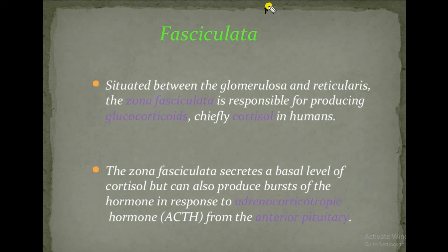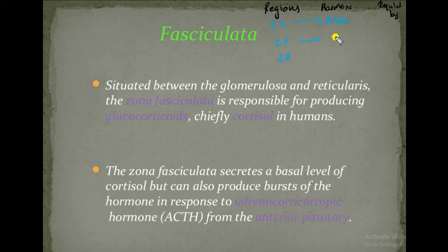I am drawing the regions of the adrenal cortex: zona glomerulosa, zona fasciculata, and zona reticularis. The hormones regulated by zona glomerulosa include aldosterone; zona fasciculata produces glucocorticoids or cortisol; and zona reticularis produces androgens and glucocorticoids. Androgens are regulated by ACTH level, and aldosterone is regulated by angiotensin II and potassium concentration level.